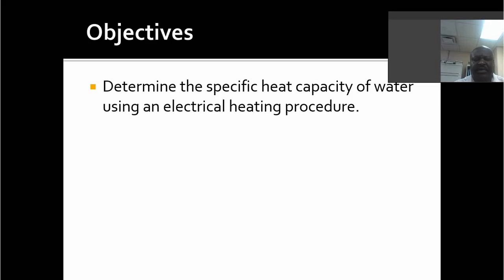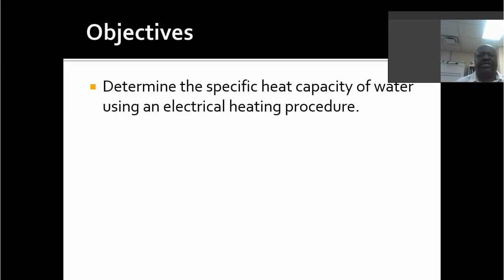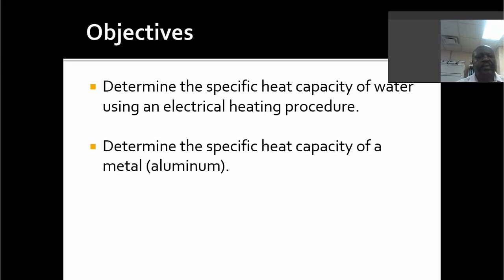The objective for the lab this week is to obtain the specific heat capacity. We're going to do it using an electrical procedure — we'll add heat electrically. We'll do that for the case of water; the case of aluminum is a little different, so we'll approach that differently.